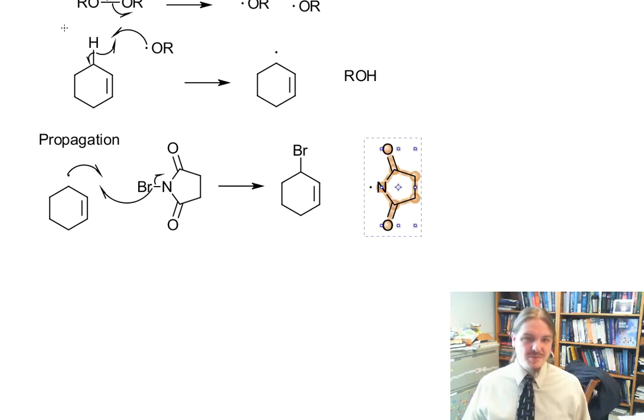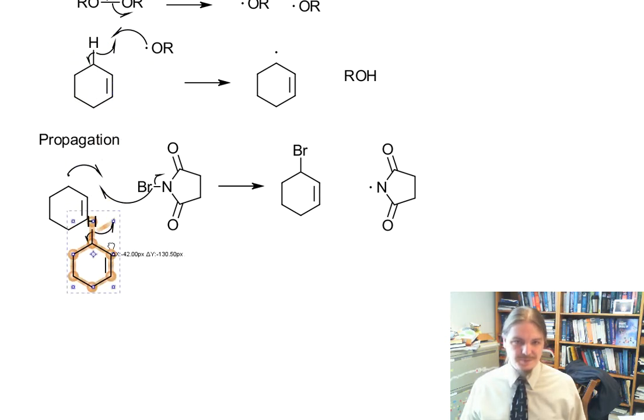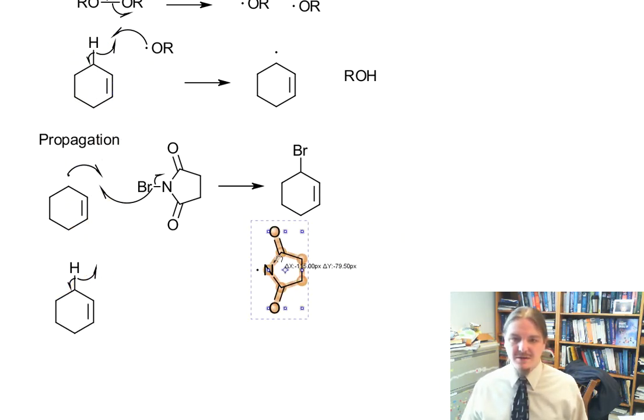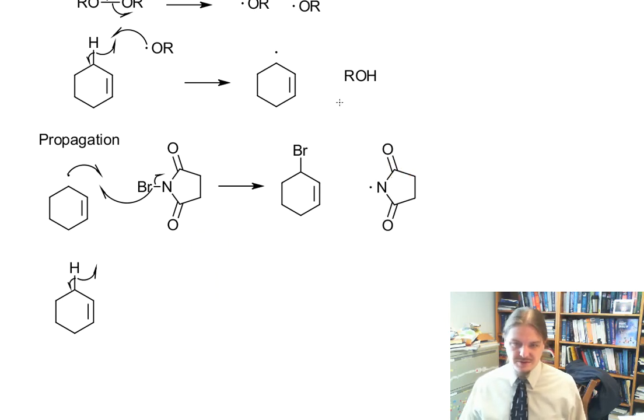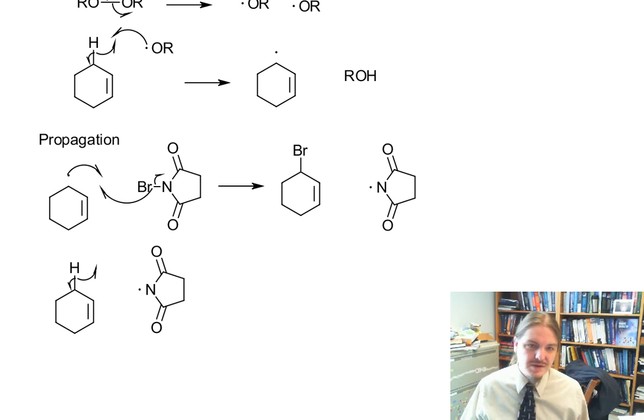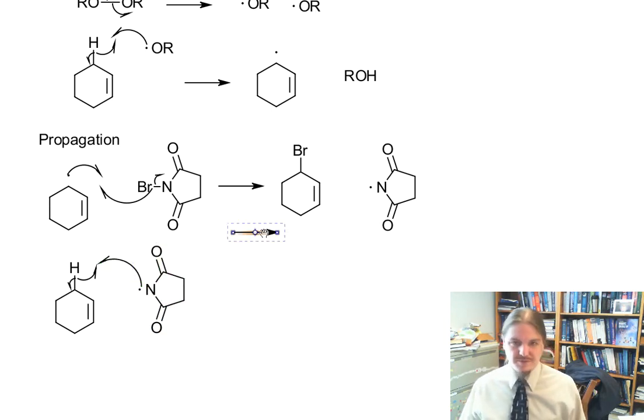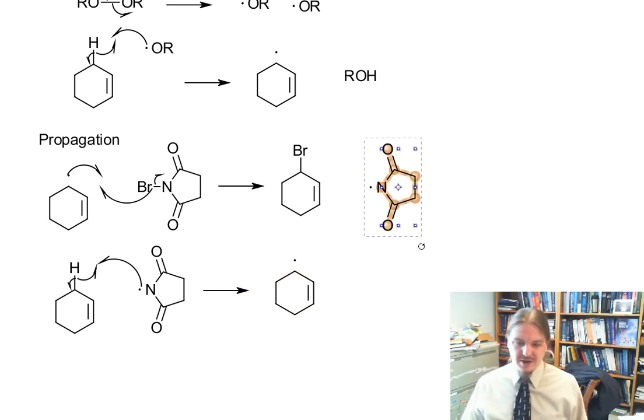And so now in the second propagation step, we have another hydrogen abstraction using the succinamide radical. We make another allyl radical. And we make as our other product in this step, the succinamide.